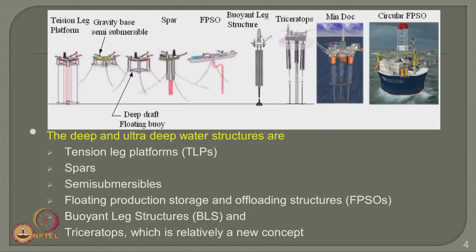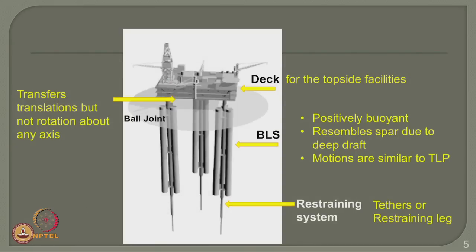Triceratops is one kind of offshore platform conceived on a novel geometry, essentially applicable to deep and ultra deep waters for oil and gas exploration and production. It is relatively a new concept. Since it is a new concept, viewers must understand the structural form of this particular problem and the experimental investigation applied to understand the components in a given design FMEA. The picture in the slide now shows a conceptual view of an offshore triceratops. Let us quickly see what components are vital contributors to the assembly of a triceratops.